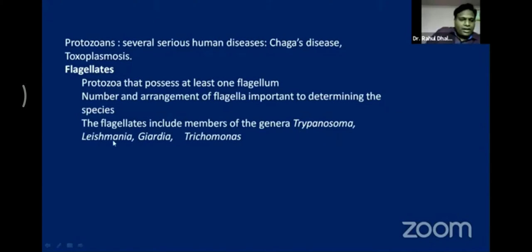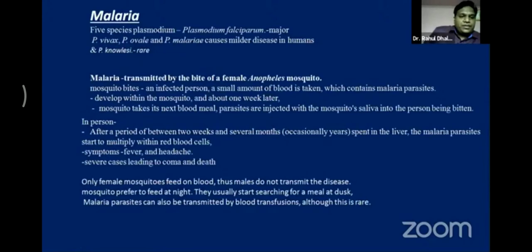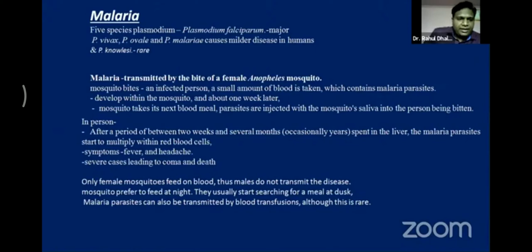Other protozoa include Trypanosoma, Leishmania, Giardia, and Trichomonas — these are examples only, not discussed in detail. The second major protozoan group is malaria. Five species of Plasmodium exist, but Plasmodium falciparum is the major one; Plasmodium vivax, Plasmodium ovale also cause malaria; and Plasmodium malariae rarely causes malaria. Malaria is transmitted by the bite of the female Anopheles mosquito.